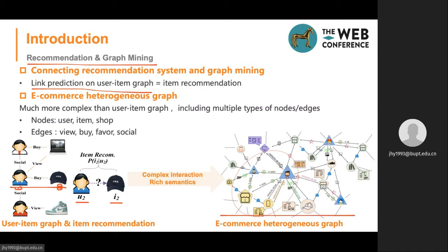But actually our commercial scenario is much more complex. There may be some users, some items, some shops, and maybe some social connections between users. So it's called the commercial heterogeneous graph, which includes multiple types of nodes and edges. From the bipartite graph to the heterogeneous graph, there are complex interactions and rich semantics.